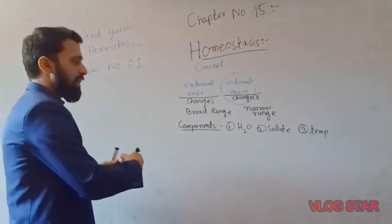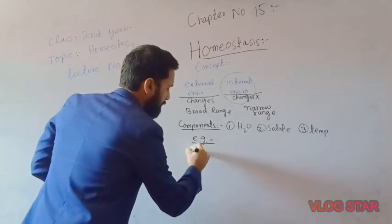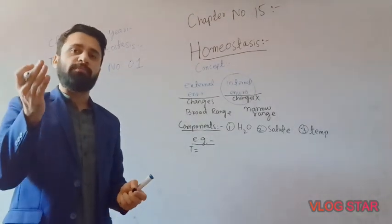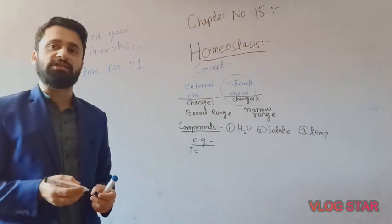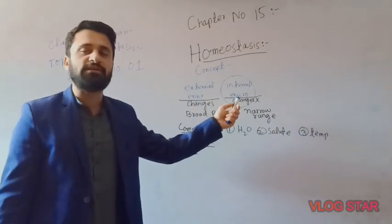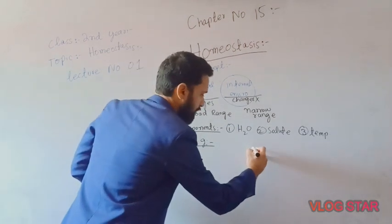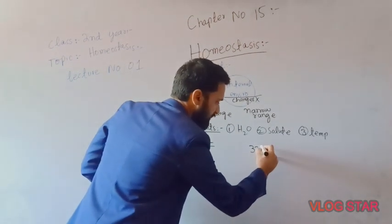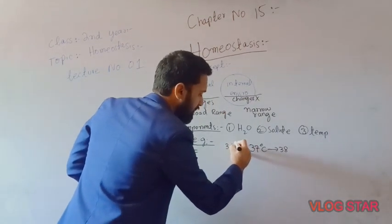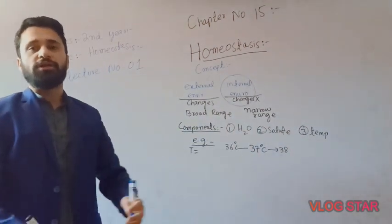Let me give you an example of broad range versus narrow range. Look at the environment — temperature can vary and decrease greatly. However, your body temperature is maintained at 37°C. It can be 38 or 36, so this is just a narrow range. This is what makes homeostasis important.